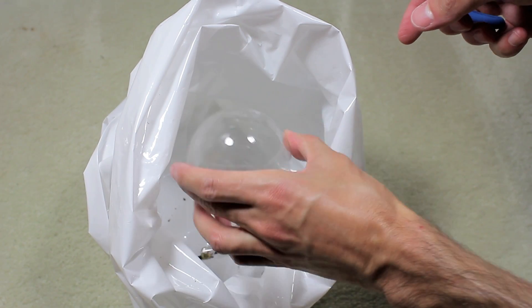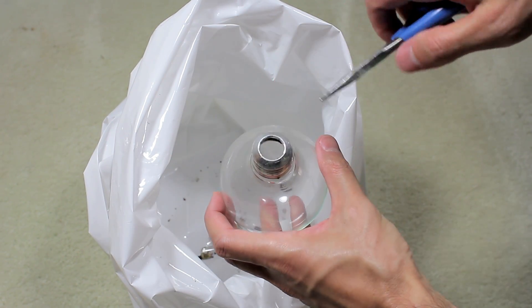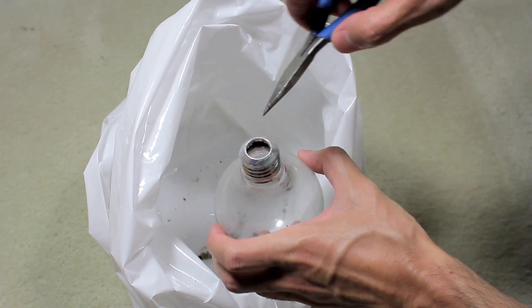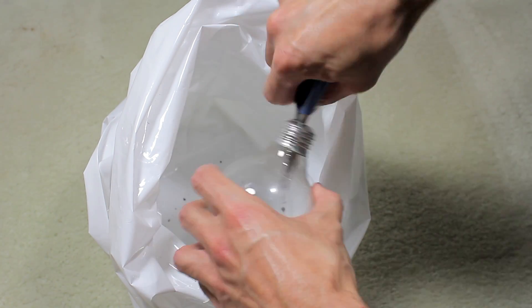Wiggling the pliers around can help eliminate sharp glassy edges inside. Nevertheless, it is not recommended to stick a finger in there.